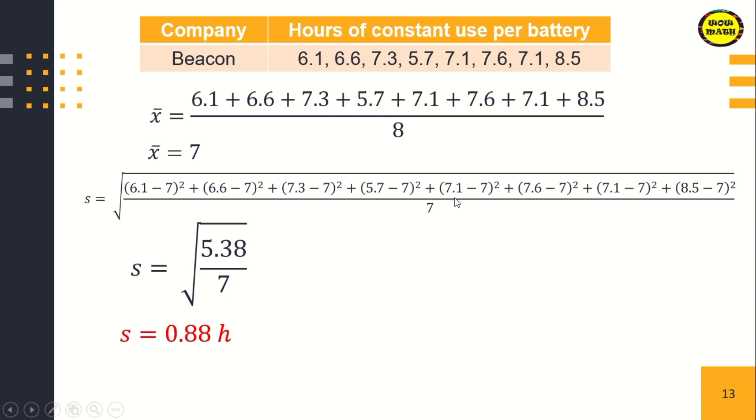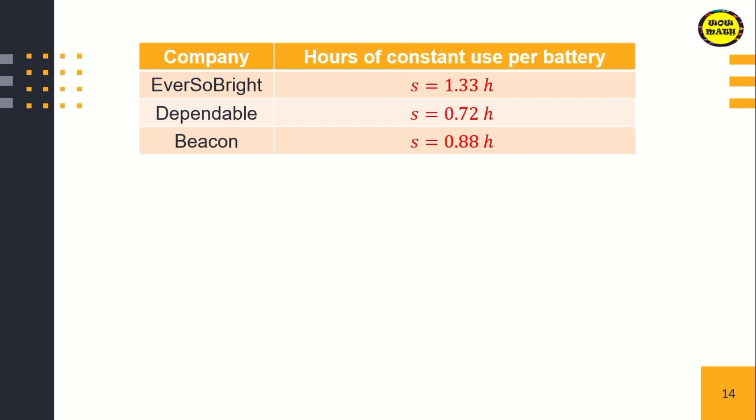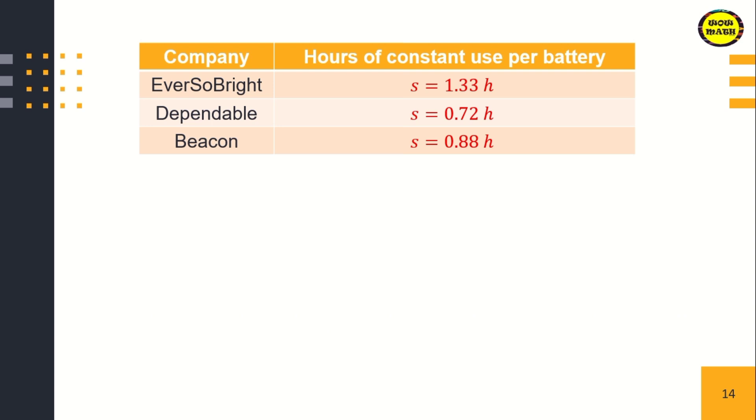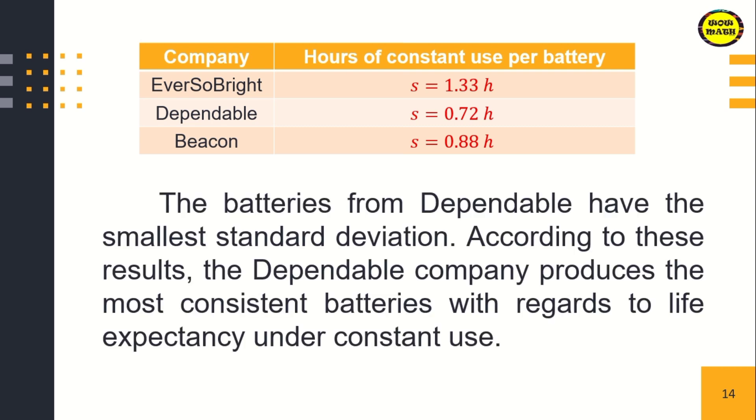After that, we compare. For EverSoBright, the standard deviation is 1.33 hours. For Dependable, it's 0.72 hours. For the third company, 0.88. So whoever has the lowest standard deviation, that means the batteries from Dependable have the smallest standard deviation. According to this result, the Dependable company produced the most consistent batteries with regards to life expectancy under constant use.